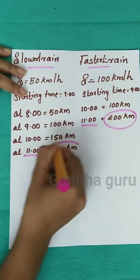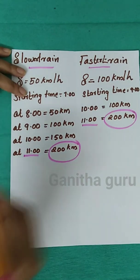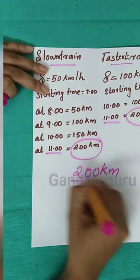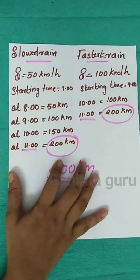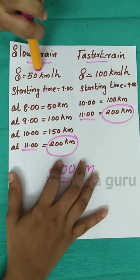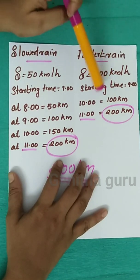The two trains together cover 200 km. The faster train catches the slower train at the 200 km mark.